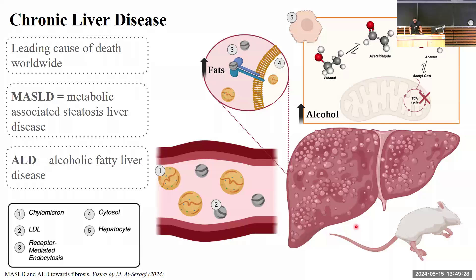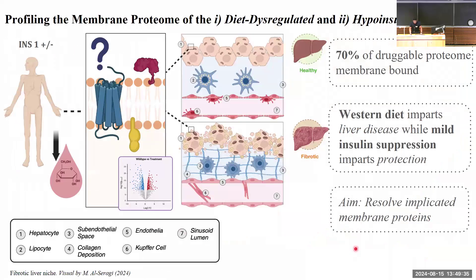70% of the druggable proteome is membrane-bound, yet large-scale proteomic initiatives tend to miss detection of some of our most important membrane proteins. At the same time, research from the Johnson Group has shown that mild suppression of hyperinsulinemia can impart a protective response against disease by lowering fasting blood glucose and body weight. Putting these ideas together, our goal was to use mimetic-based membrane proteomics to define the pathophysiology of liver disease at the high-fat, high-alcohol junction, while resolving the mechanisms underlying the protective phenotype of mild insulin suppression.